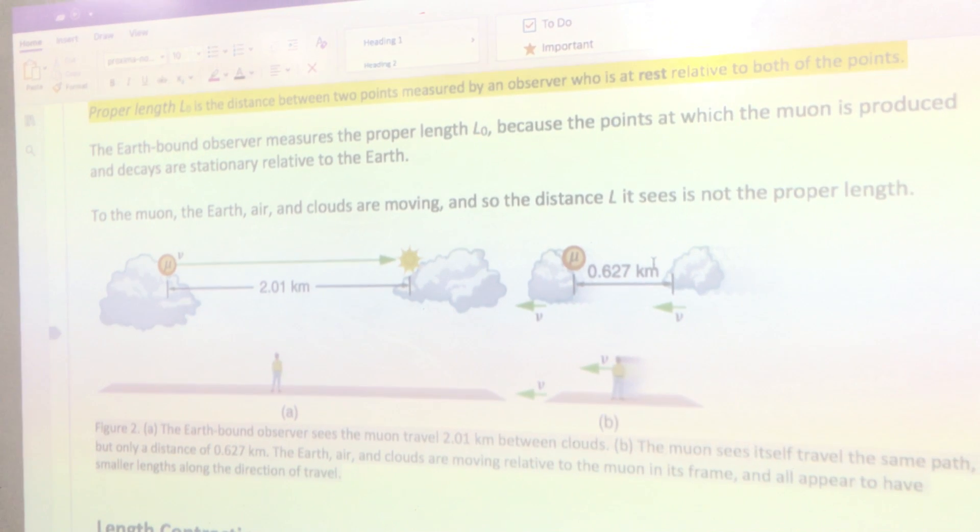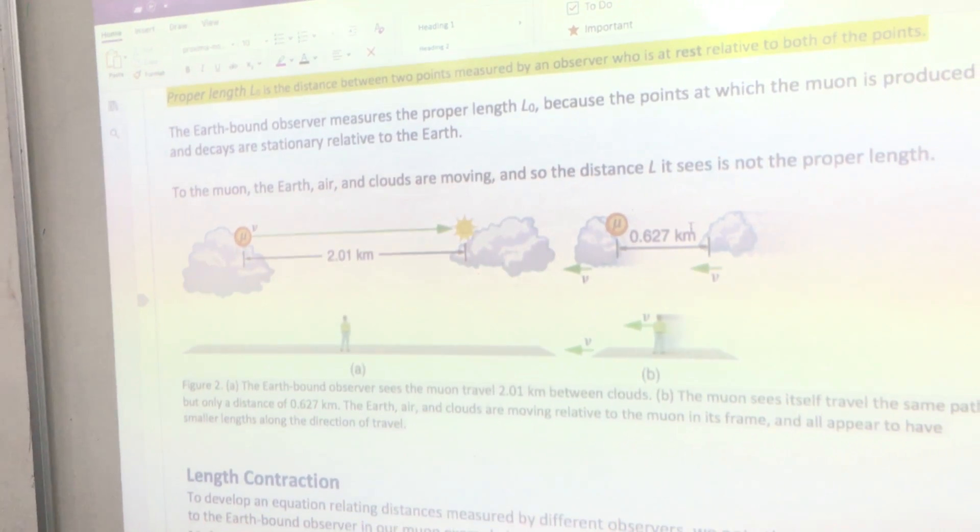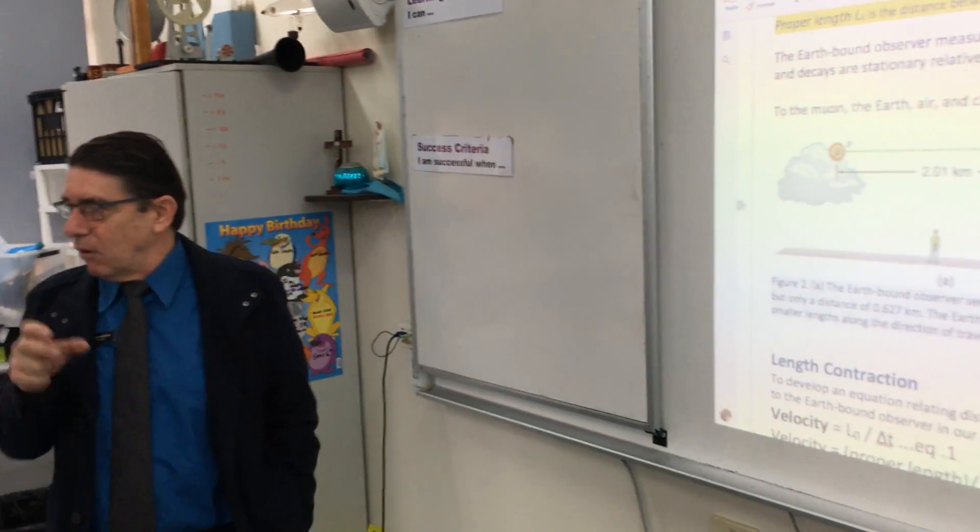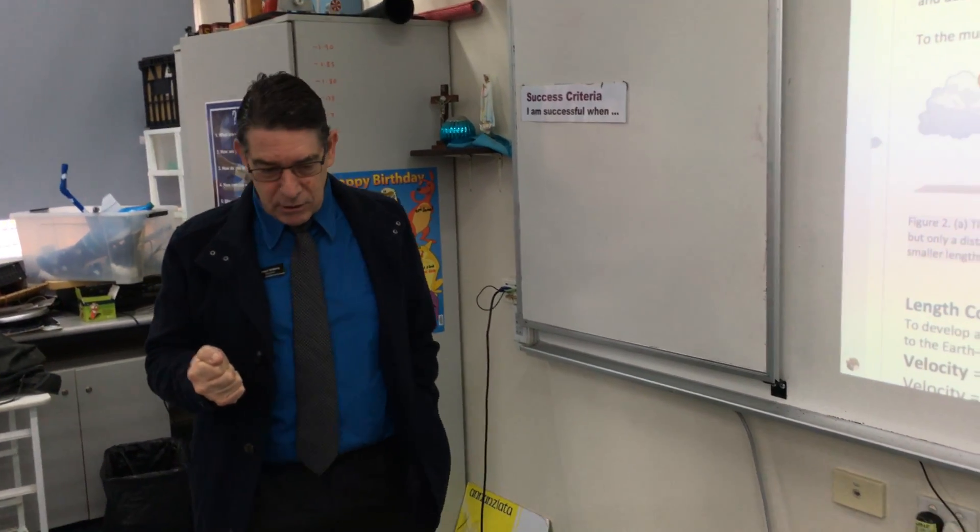The muon, however, is travelling along, travels 627 metres and does it in 2.2 microseconds. There's different numbers involved in both of those due to the fact that the muon is travelling close to the speed of light.